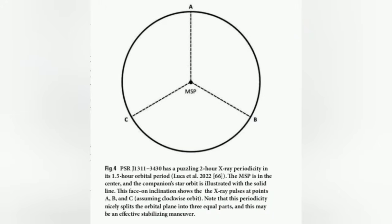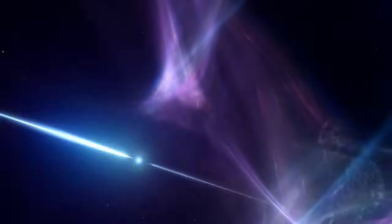Things get even spookier. In a four-year period from 2019 to 2023, astronomers believe they may have observed a millisecond pulsar performing a stabilization maneuver. PSR J1311−3430 had a puzzling two-hour x-ray periodicity in a 1.5-hour orbital period. The face-on inclination of the pulses compared to its companion star occurred at points A, B, and C — meaning the x-ray pulses split the orbital periodicity into three equal parts, providing exactly the same thrust in all three directions, creating the equivalent of a stabilization maneuver. An amazing coincidence if this happened purely by chance; it looks much more like something that happened by design.